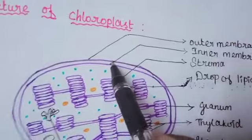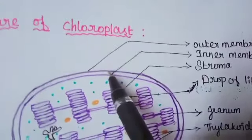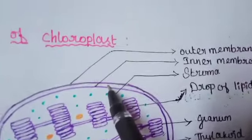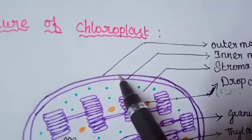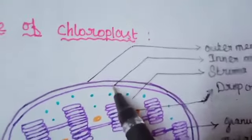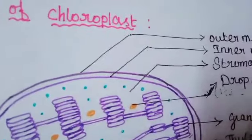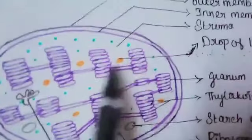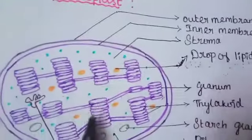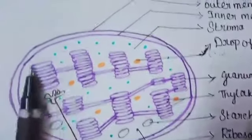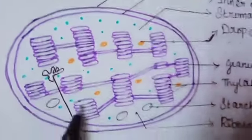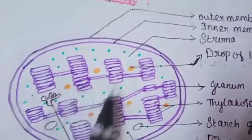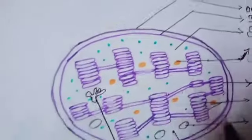There are two envelope membranes covering the chloroplast: an outer membrane and an inner membrane, separated by the inter-membrane space. Inside the membrane is the stroma matrix. The stroma contains DNA, 70S ribosomes, and other molecules required for protein synthesis.